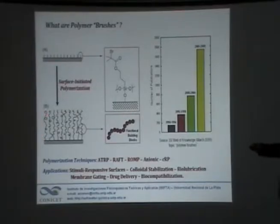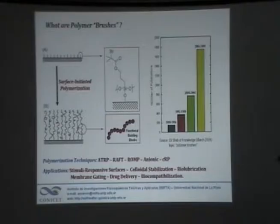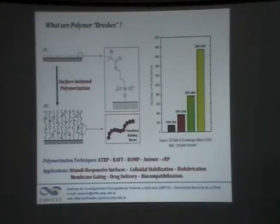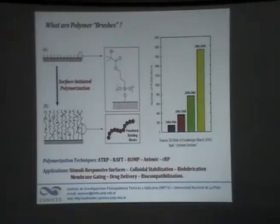Then we have the other end of the polymer chain free — hanging around there at the interface. The thing is that you can combine different chemistries using different polymerization techniques. You can use different building blocks, different monomer units, or you can design your own monomer units to grow polymers and to modify polymer films on the surface.